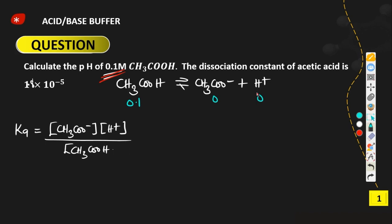At the initial step the reaction has just started, so none of the acetate or hydrogen ion has been formed. Initially: acetic acid = 0.1, acetate ion = 0, hydrogen ion = 0. As time progresses, some of the acetic acid breaks down to form hydrogen ion and acetate ion. Let x be the amount that dissociates, so at equilibrium acetic acid remaining = 0.1 minus x.